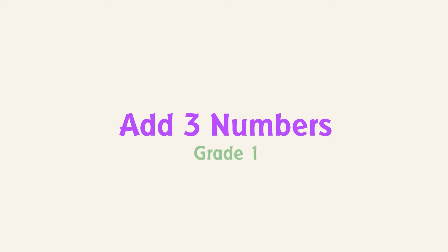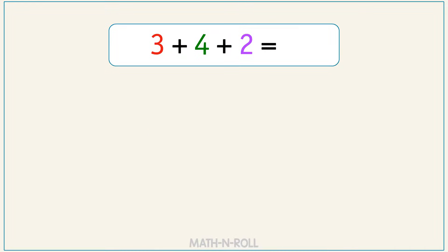Add three numbers. Grade 1. When we add three numbers, we can change which two addends we add first. The sum will always stay the same. Let's try an example.